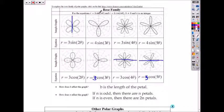If you write it as b sine of n-theta or b cosine of n-theta, b is the length of the petal. So you see it's one, two, three, so it's three. Here's one, two, three again. Here's one, two, three, four, so you write it four.